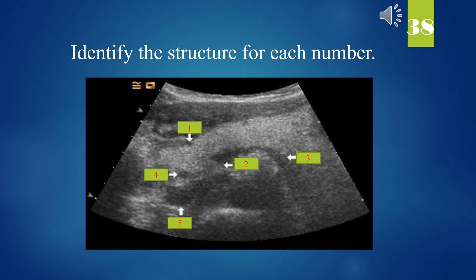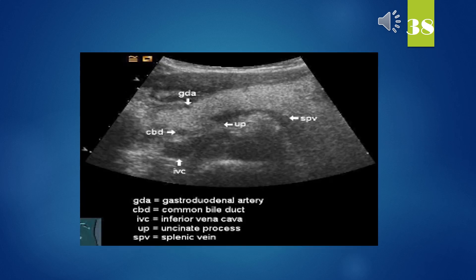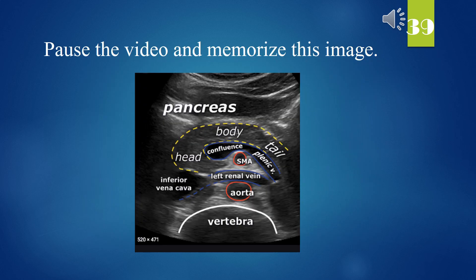Identify the structure for each number. Pause the video if you need. 1. GDA — Gastroduodenal artery. 2. UP — Uncinate process. 3. SPV — Splenic vein. 4. CBD — Common bile duct. 5. IVC — Inferior vena cava. Pause the video and memorize this image.